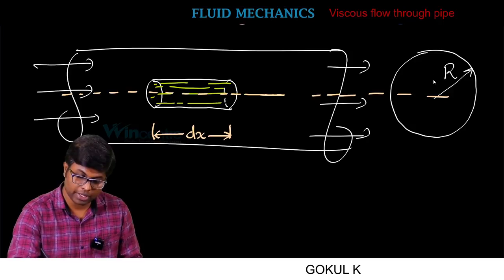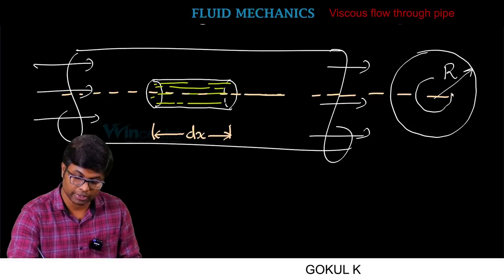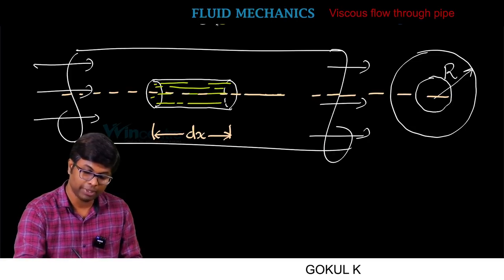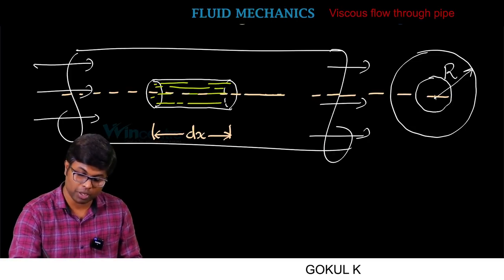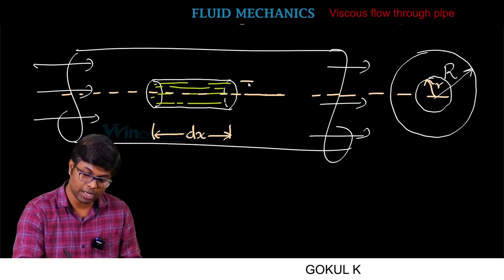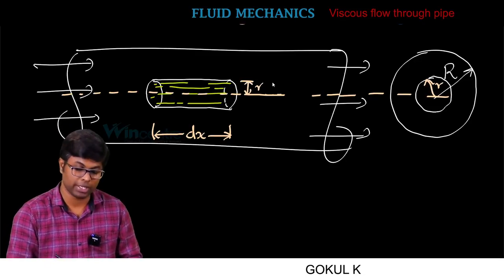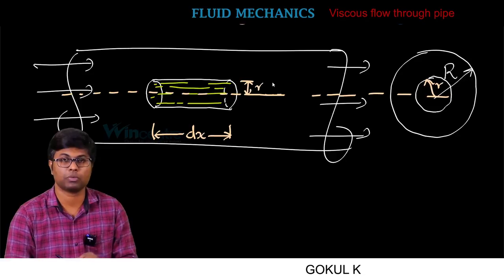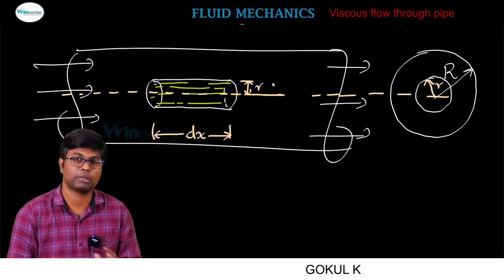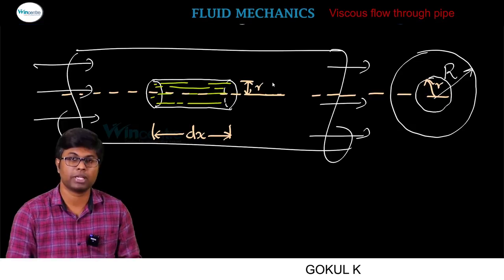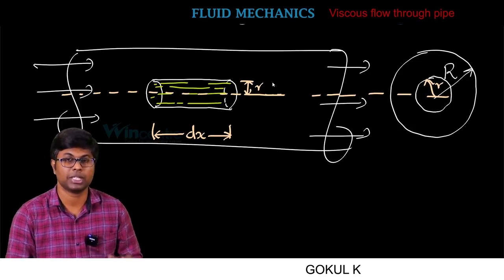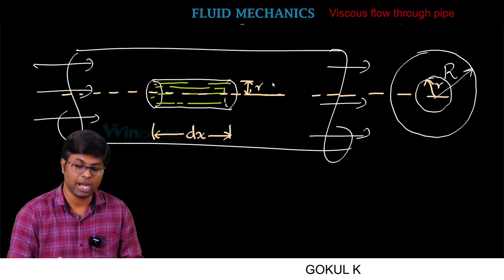I will consider the cross-section. This is a cylindrical element whose radius, let it be r. One cylindrical element of radius r is considered. This cylindrical element has forces acting on it. In viscous flow, there is a shear force and shear stress.